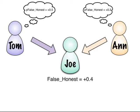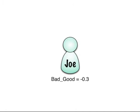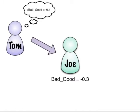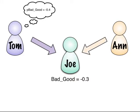The P False Honest value is what we normally call trust. The same applies to the other personality traits — the perceived value is based on personal experience and can often differ from the actual value. Tom might have seen Joe at his worst and therefore have a low P Bad Good value for Joe. Anne might have seen only Joe's better side and perceive his Bad Good to be higher than it really is. The P Bad Good value can be thought of as affection.